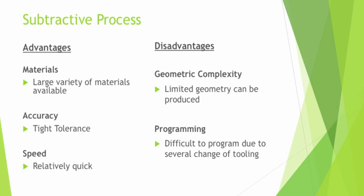I hope you now know the steps involved in the subtractive process. Moving on to the advantages and disadvantages: in terms of material, there are a large variety of materials available, mainly because the subtractive process is very simple — you just need a milling machine that cuts away material. Basically, if you have a tool that is harder and sharper than the material you want to cut away, you can use the subtractive process. In terms of accuracy, the subtractive process offers very tight tolerances because the toolings are very sharp. For speed, it is a relatively quick process, and it can also be automated, which increases the speed further.